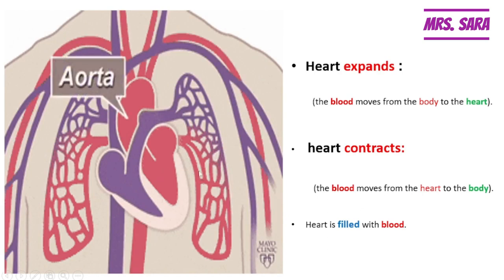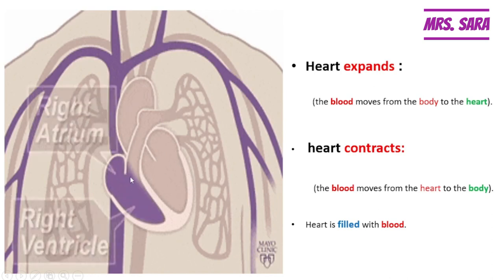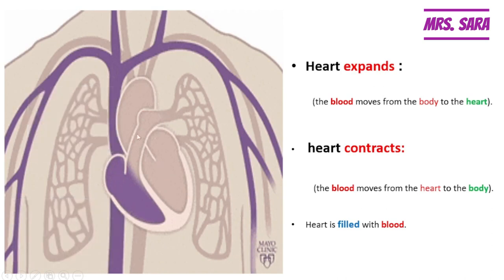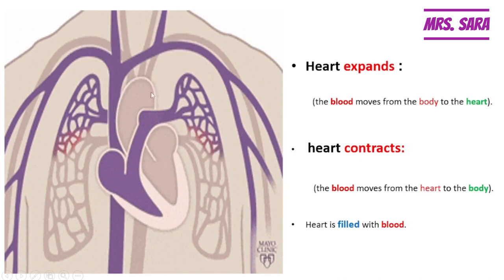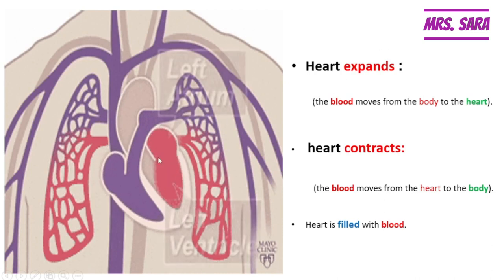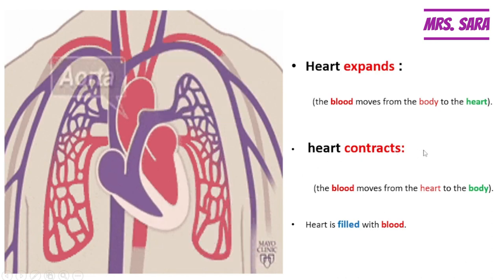When the heart becomes smaller, that means the heart is shrinking and pushing blood from the heart to the whole body. That means the blood moves from the heart to the body. This is called heart contracts. So when the heart becomes bigger, this is called heart expands. When the heart becomes smaller, this is called heart contracts.